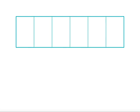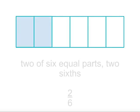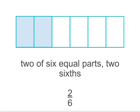Let's look at another one. To represent the fraction two sixths, we divide the bar into six equal parts and then shade in two of them. This shows two of six equal parts, or two sixths.